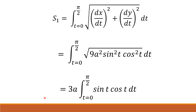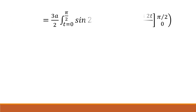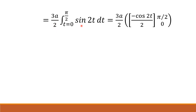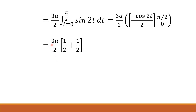We simplify further by multiplying and dividing by 2, replacing 2 sin t cos t with sin 2t. This gives a simple integration whose result is minus cos 2t divided by 2, evaluated from 0 to π/2. Substituting the limits, we get 3a/2 times (1/2 plus 1/2), which simplifies to s1 equal to 3a/2.